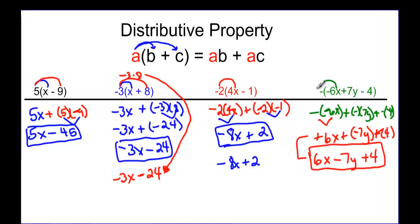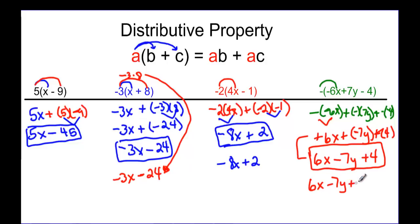You could also say: negative six X times negative one is positive six X, negative one times positive seven Y is minus seven Y, and negative one times negative four is positive four. Either way, you get the same answer.